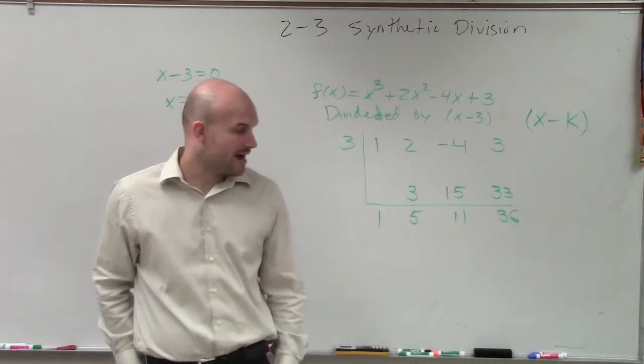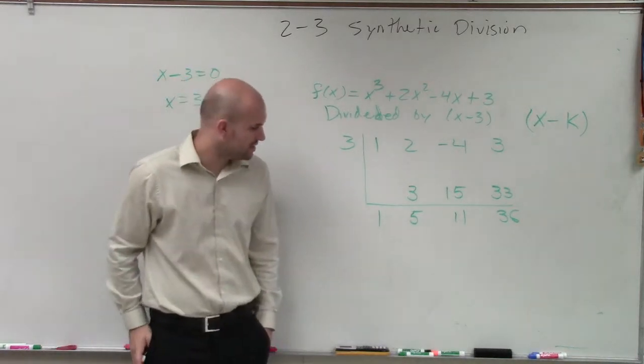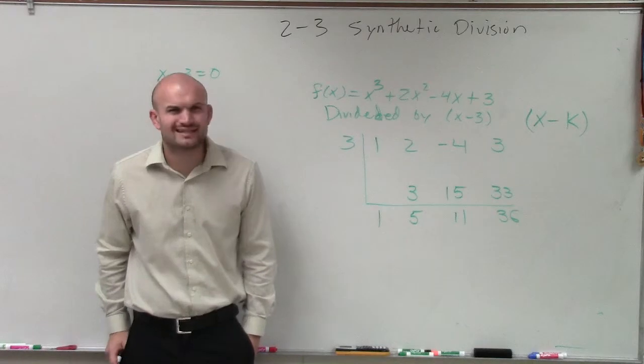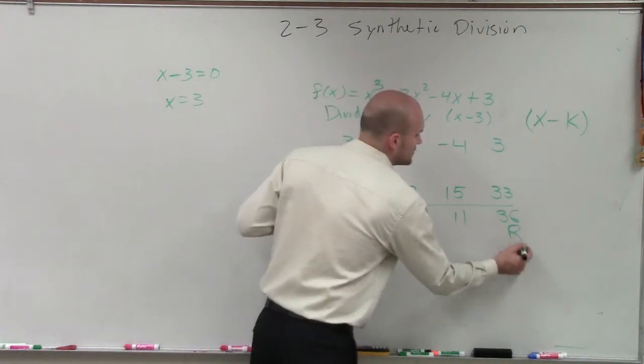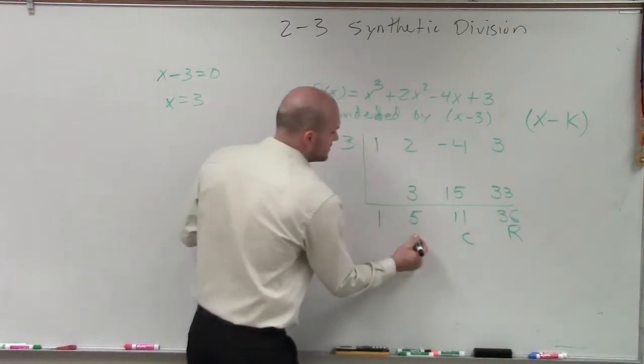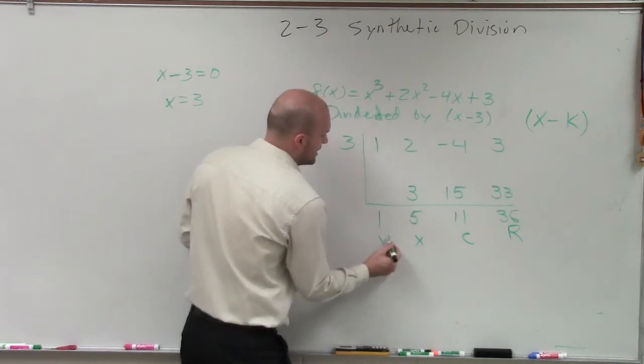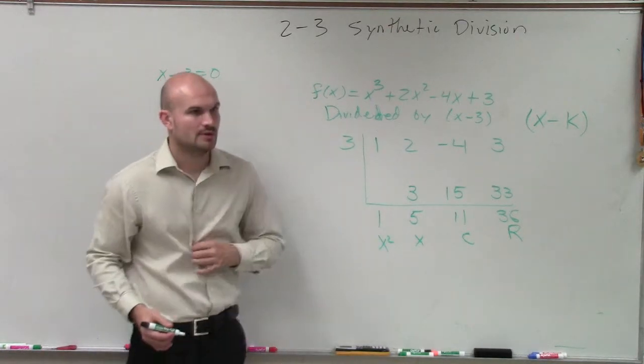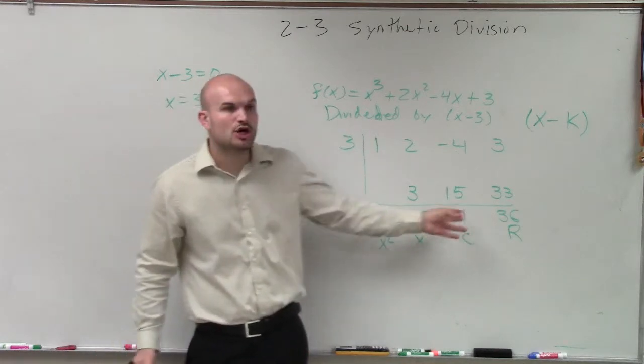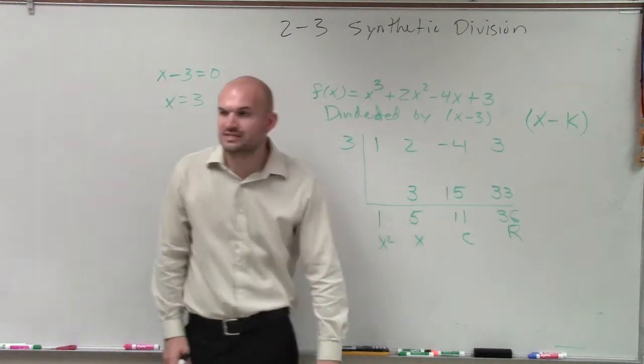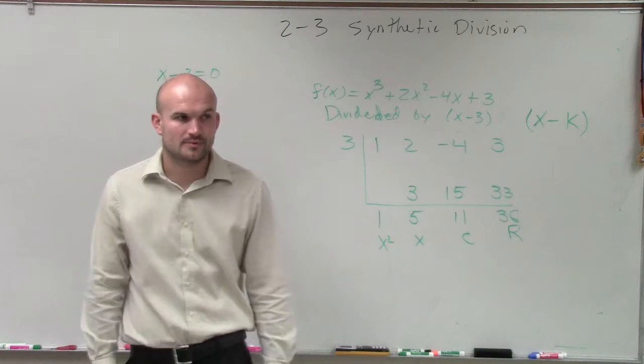So therefore, in this problem, I have my quotient is 1, 5, 11, 36. What does that mean? So when we do this, we write, first, here's my remainder, my constant, my linear, and my quadratic. And what this means is, these are going to be my coefficients of my quotient, where 36 is going to be my remainder.